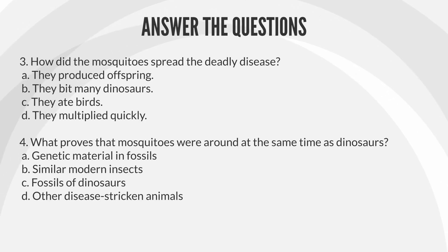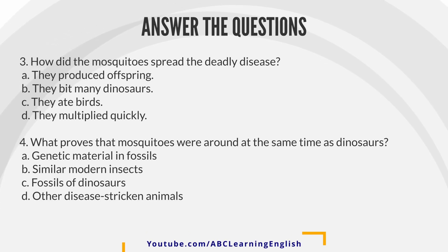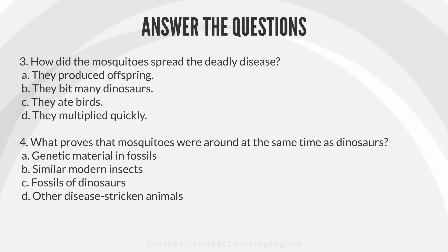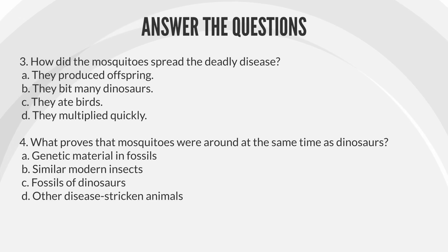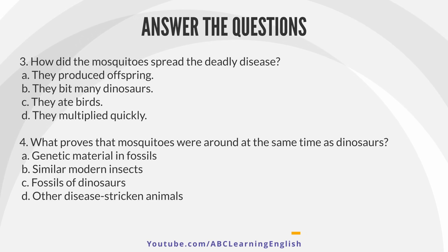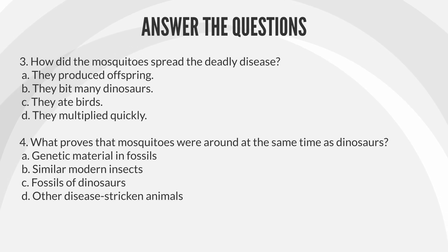3. How did the mosquitoes spread the deadly disease? A. They produced offspring. B. They bit many dinosaurs. C. They ate birds. D. They multiplied quickly. 4. What proves that mosquitoes were around at the same time as dinosaurs? A. Genetic material in fossils. B. Similar modern insects. C. Fossils of dinosaurs. D. Other disease-stricken animals.